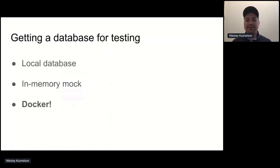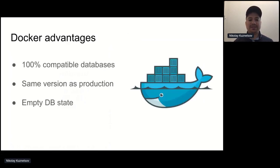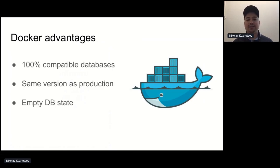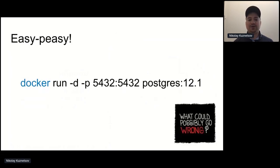We want to get a database for testing. We can use a local database, some in-memory mock emulation, or a much better approach is to use Docker to start the database in a Docker container. This provides a lot of advantages — it's a 100% compatible database, and for tests you can use exactly the same version as you use for production. And you're always sure about the state of the database: it's either empty or the one which you have configured. So now we have a Go service and a database running in a Docker container.